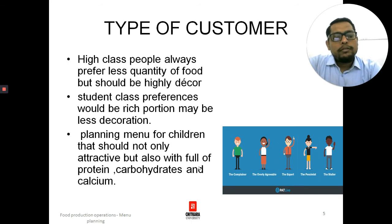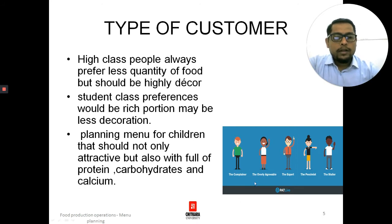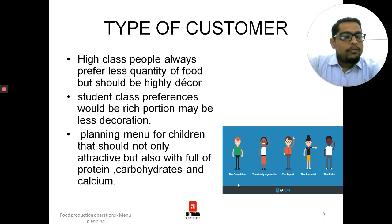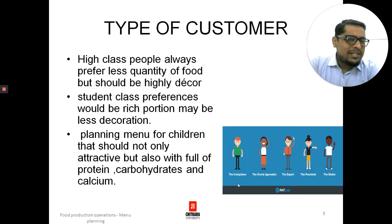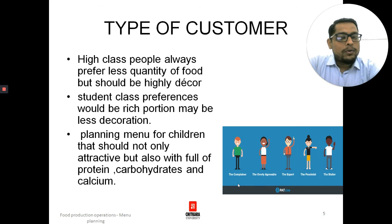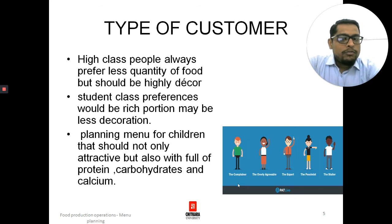There are many types of customers: the complainer, the overly agreeable, the expert, the pessimist, and the silent one. The complainer will always complain. The overly agreeable will always agree with everything. The expert will always say what should be added to the dish. The pessimist will always say 'no, this is not good.' The silent ones are more dangerous because they won't say anything but will bad-mouth the restaurant outside.